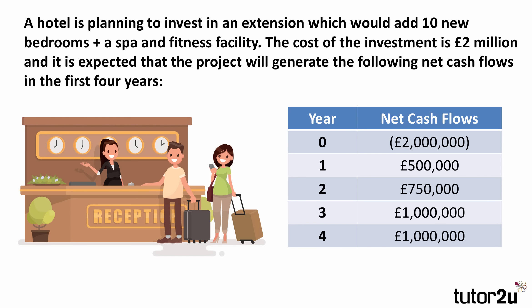So let's take a look at an example. You may want to pause the video if you want to have a go at calculating ARR on this project. A hotel is looking to spend £2 million as an investment to expand the hotel, adding some new bedrooms and new facilities. We're given a table of information showing the net cash flows over four years in addition to the investment of £2 million. In this situation, we're given the net cash flow numbers for each year.